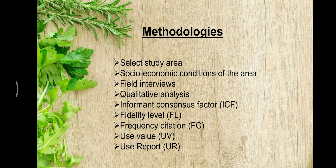The methodologies of ethnobotanical field techniques include: selecting the study area, assessing the socio-economic conditions of that area, conducting field interviews, qualitative analysis, and applying informant consensus factor, fidelity level, frequency citation, use value, and use report. From these methods, we figure out how the data can be accumulated for the plant being studied.